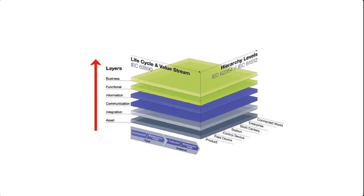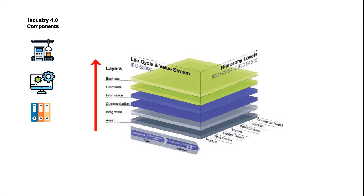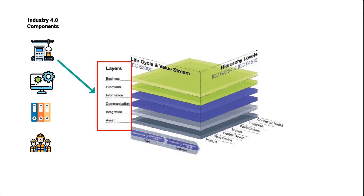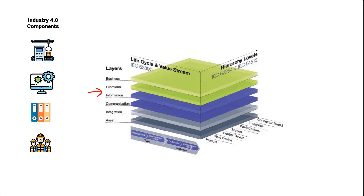This dimension represents the architecture of components within a manufacturing facility. A component, in this case, could be anything that needs to be represented in the production process, such as physical machines, software applications, documents, human beings, etc. To give a clear view of the abilities of the component in question, RAMI decomposes the architecture of a component into six layers: the asset layer, integration layer, communication layer, information layer, functional layer, and at the top, the business layer.